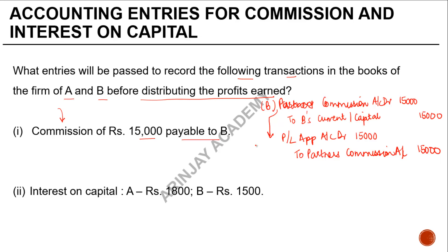What you need to note here is that this hasn't gone to the profit and loss account — it has gone to the profit and loss appropriation account. Similarly, you have interest on capital: for A it is 1,800, and for B it is 1,500.